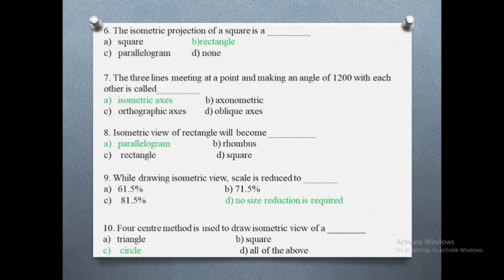Tenth and last question: four center method is used to draw isometric view of a dash. The options are: a) triangle, b) square, c) circle, d) all of the above. The correct answer is circle. Thank you for watching the video. Please like, share and subscribe to this channel.